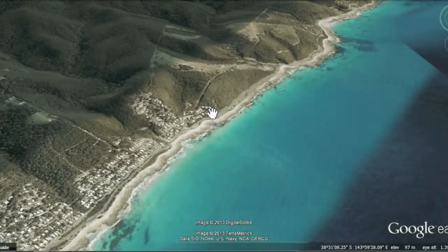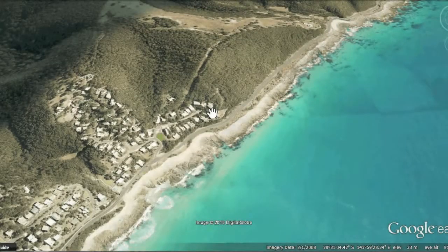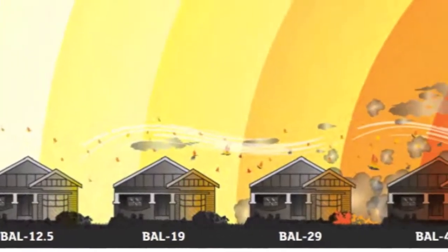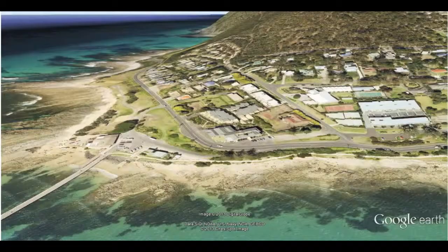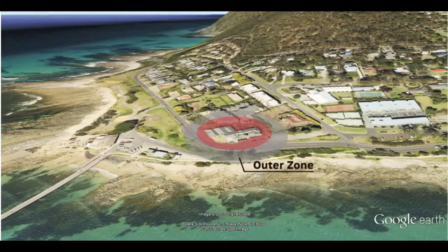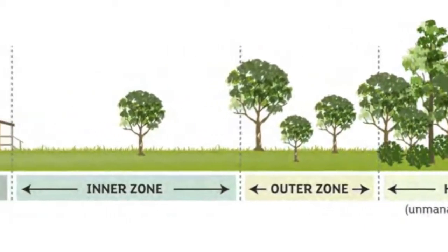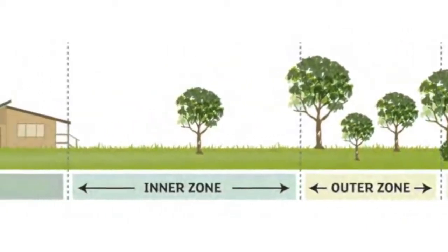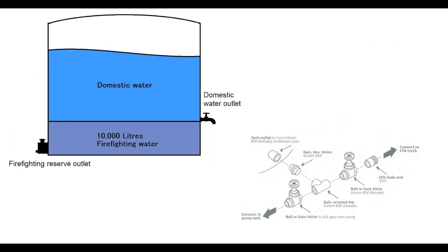The report contains site and landscape descriptions, a BAL rating, calculations of defendable space, vegetation management prescriptions, and recommendations on water supplies and access requirements.